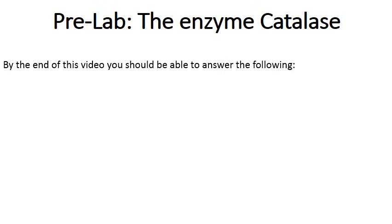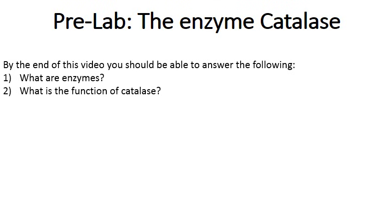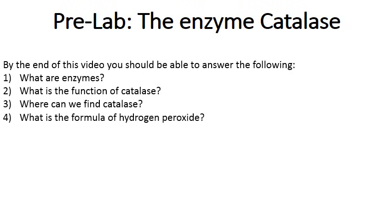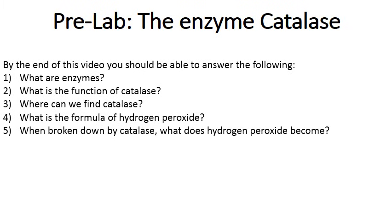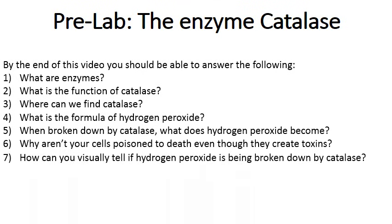By the end of the video you should be able to answer the following questions: What are enzymes? What is the function of the enzyme catalase? Where can we find catalase? What is the formula of hydrogen peroxide? When broken down by catalase, what does hydrogen peroxide become? Why aren't your cells poisoned to death even though they create toxins? And how can you visually tell if hydrogen peroxide is being broken down by catalase?